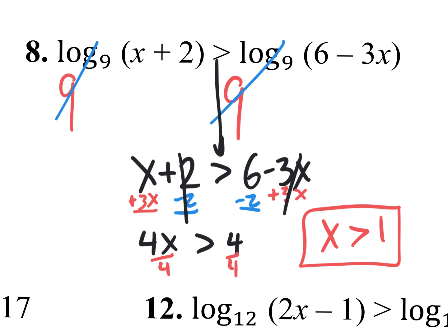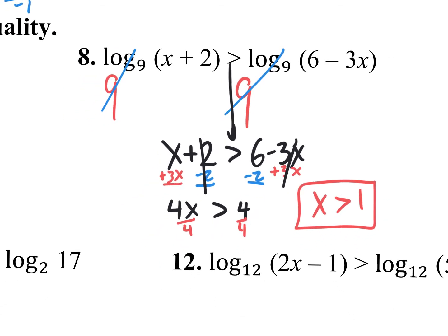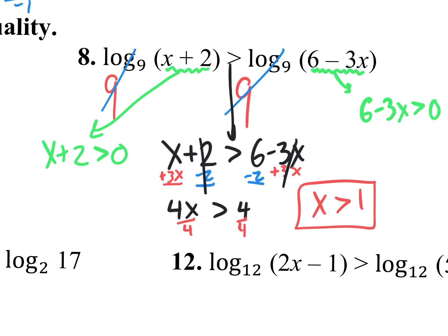We're missing another part of the problem. Because it's an inequality, we're talking about areas of answers on a number line. We know that the inside value of any logarithm cannot be 0 and cannot be negative. You can't do log base 9 of negative 3 or log base 9 of 0 — this inside value has to be greater than 0. That's another part of the problem you can't forget. Both logarithm arguments must be set greater than 0.